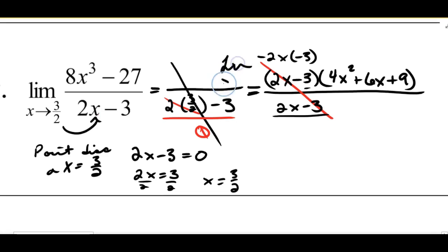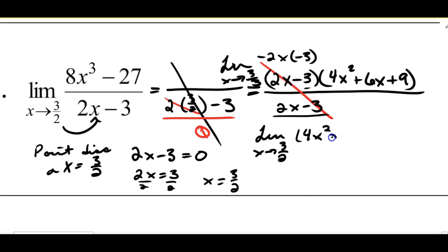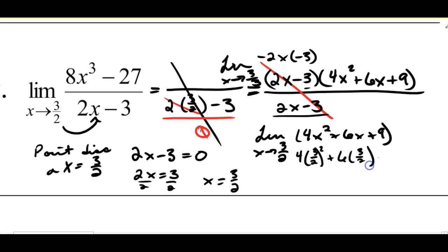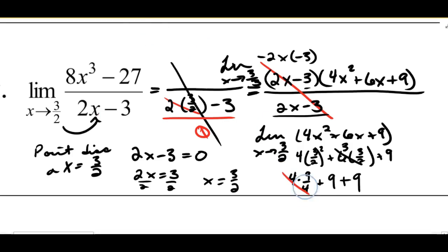This is still the limit as X approaches 3/2. The limit as X approaches 3/2 of the simplified function 4X² plus 6X plus 9. I evaluate that for 3/2: 4 times (3/2)² plus 6 times 3/2 plus 9. (3/2)² is 9/4, and 4 times 9/4 is 9. 6 and 2 cancel, leaving 3 on top: 3 times 3 is 9. So 9 plus 9 plus 9 equals 27.